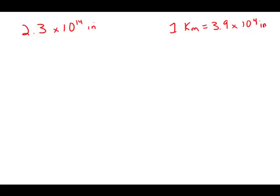The average distance between the Sun and a certain planet is approximately 2.3 times 10 to the 14th inches. Which of the following is closest to the average distance between the Sun and the planet in kilometers? They give us the conversion: how many kilometers and how many inches.